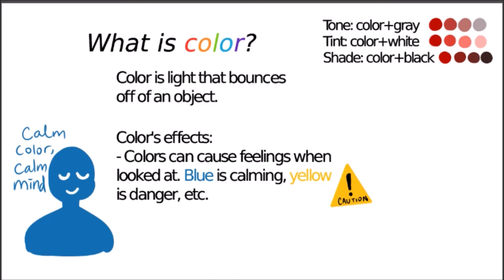Here's a little bit of color vocabulary. Tone is the color plus gray; it can also be referred to as saturation. Tint is the color plus white, so it becomes lighter.